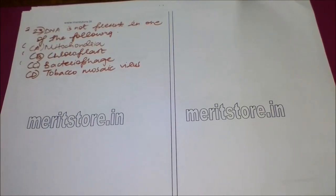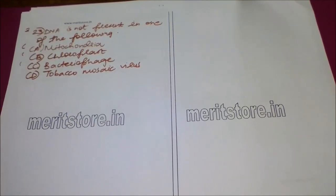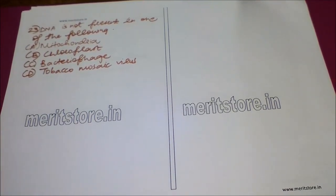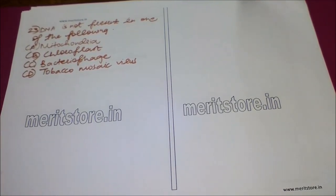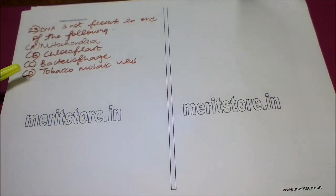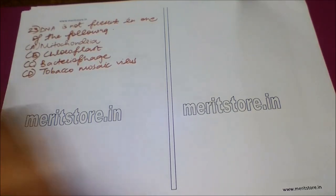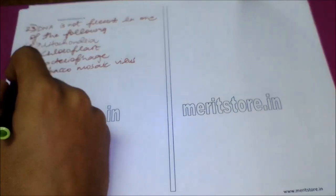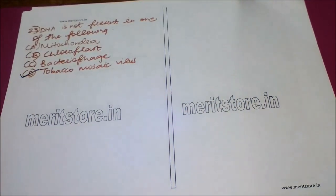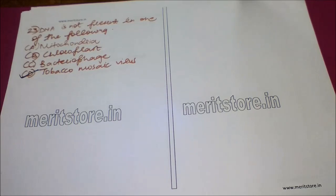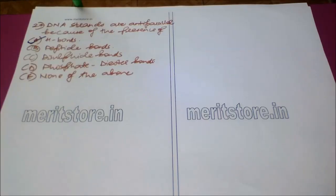DNA is not found in which of the following? Option A: mitochondria, Option B: chloroplast, Option C: bacteriophage, and Option D: tobacco mosaic virus. The correct answer is Option D: tobacco mosaic virus, where we find RNA as the genetic material. In the remaining options, DNA is present.